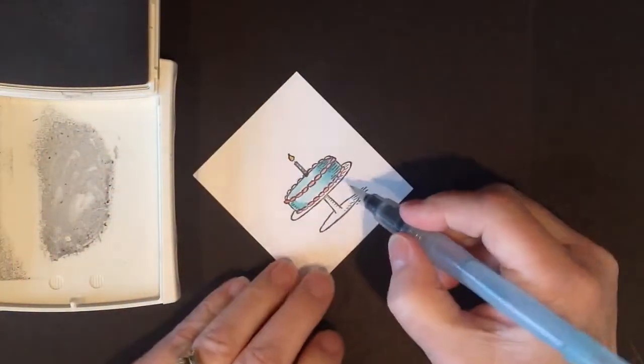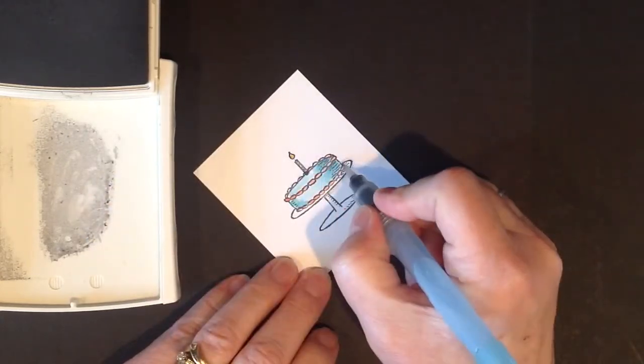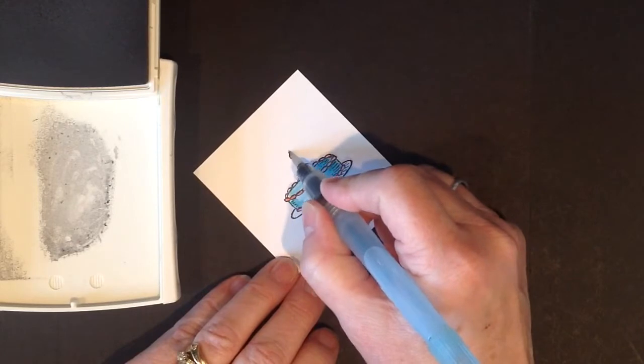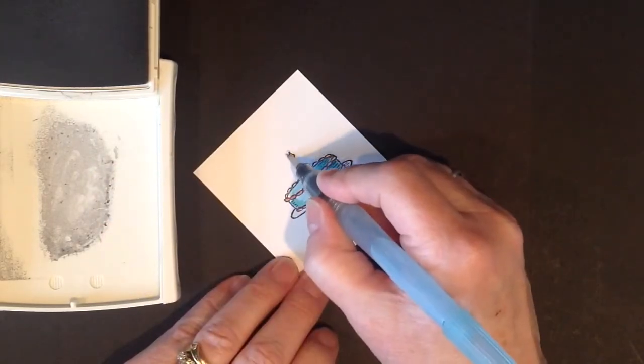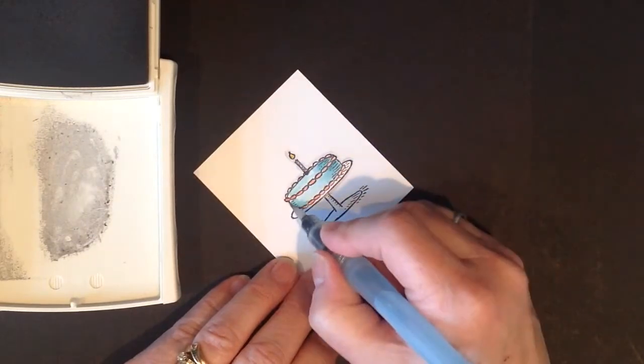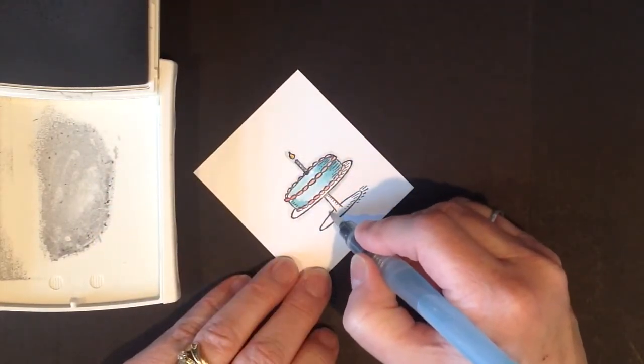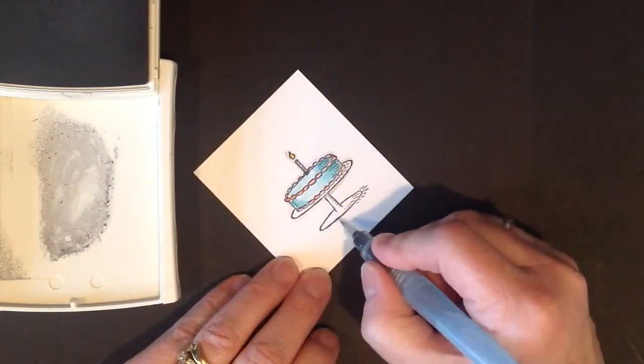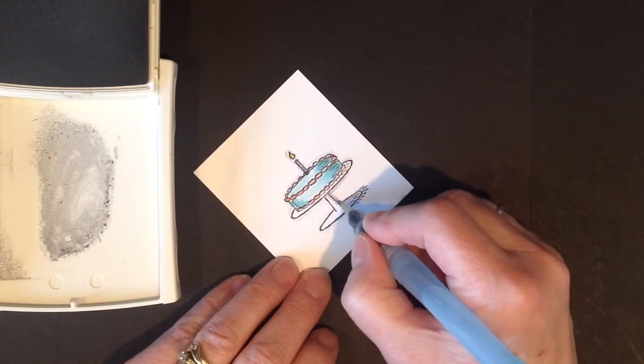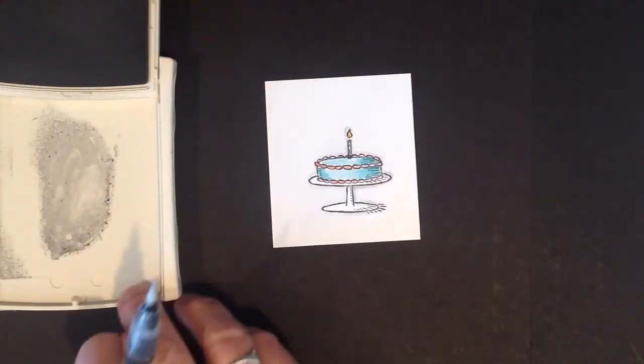Now I'm going to take some Smoky Slate. What this does is I'm just going to create a little shadow around this whole watercolored image. It just kind of sets off your image and gives it a little bit of a neat look. I'm not exactly sure the artistic reasoning for it, but it does kind of set off your stamped image.